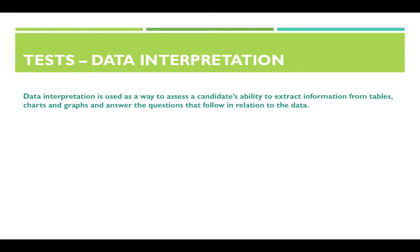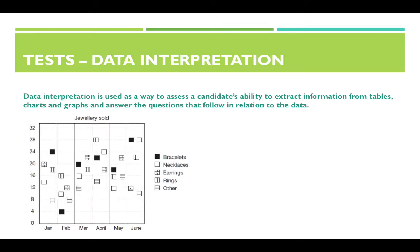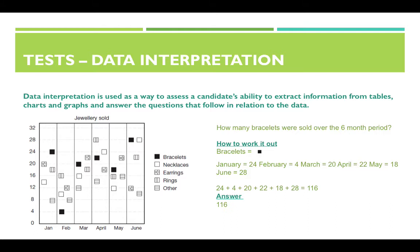Data interpretation is used to assess a candidate's ability to extract information from tables, charts and graphs and answer questions in relation to that data. Here we have a chart. How many bracelets were sold over the six month period? The bracelets are shown by the black square. Adding them up: January 24, February 4, March 20, April 22, May 18, and June 28 — all added together gives you the answer of 116.